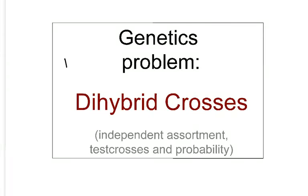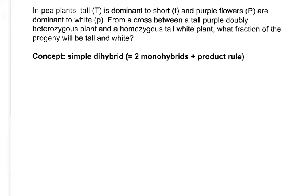This is genetics, and today's problem is dihybrid crosses in pea plants. Tall is dominant to short and purple flowers are dominant to white. From a cross between a tall, purple doubly heterozygous plant — so let's write heterozygous for tall and heterozygous for purple —